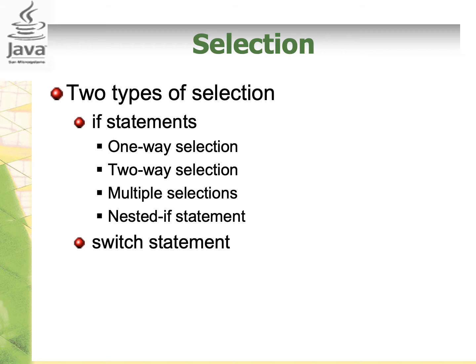In selections, there are two types: if statements and switch statements. In if statements, it can be one-way selection, two-way selection, multiple selections, and also nested if statements. We will look at all of this.